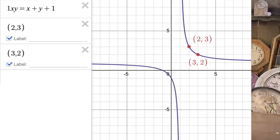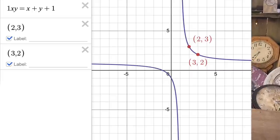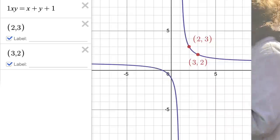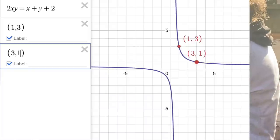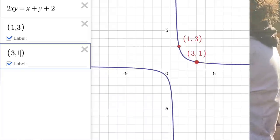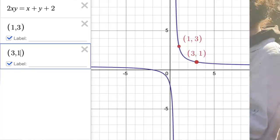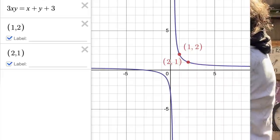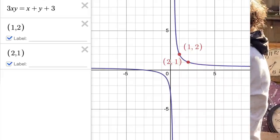Because when z was 1, the coordinates 2, 3, and 3, 2 were on that graph. When z was 2, the coordinates 1, 3, and 3, 1 were on there. And when z was 3, the coordinates 2, 1, and 1, 2 were on there.